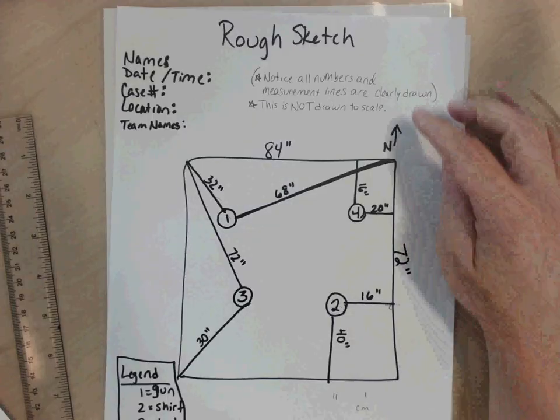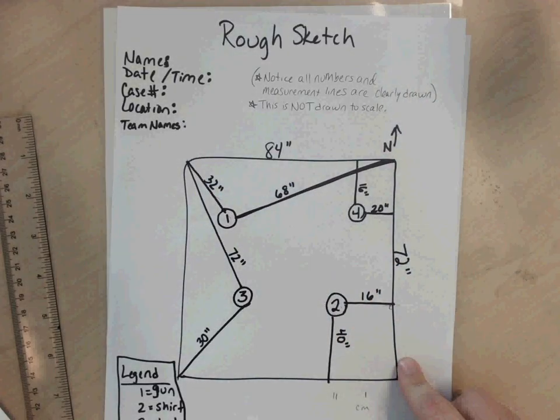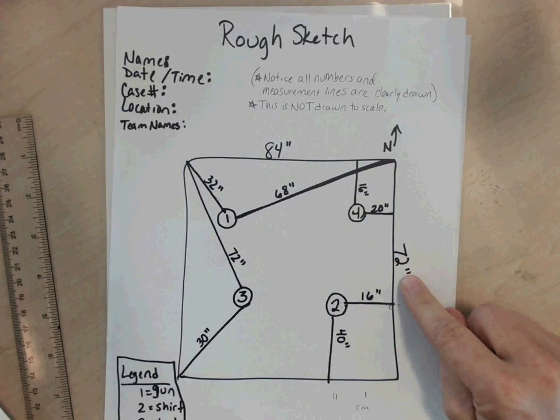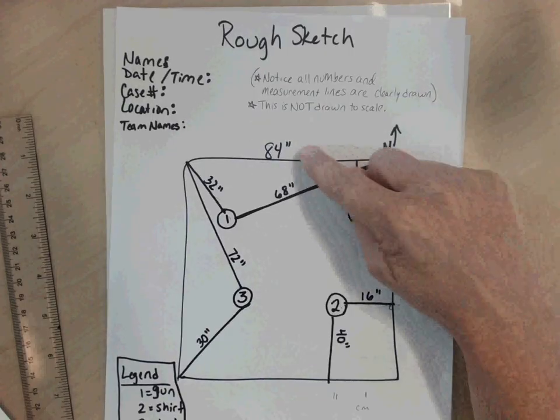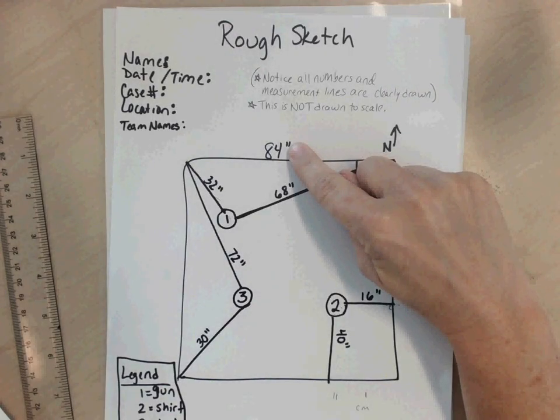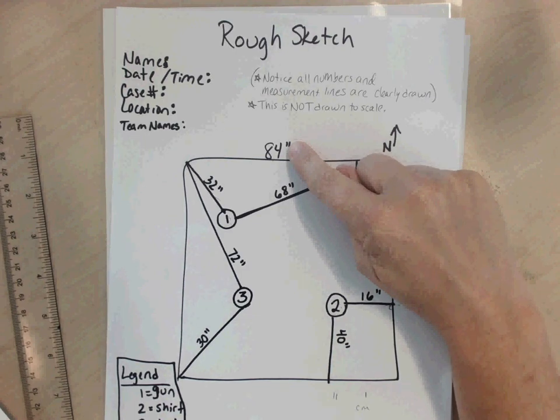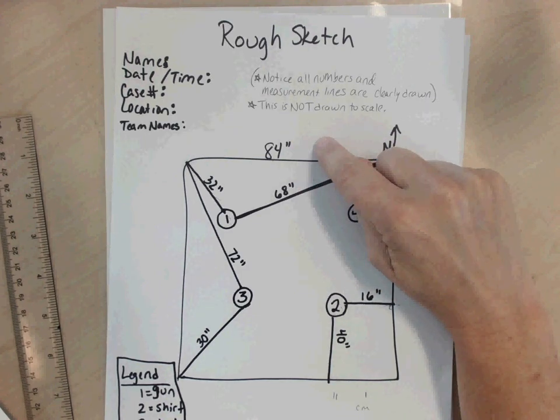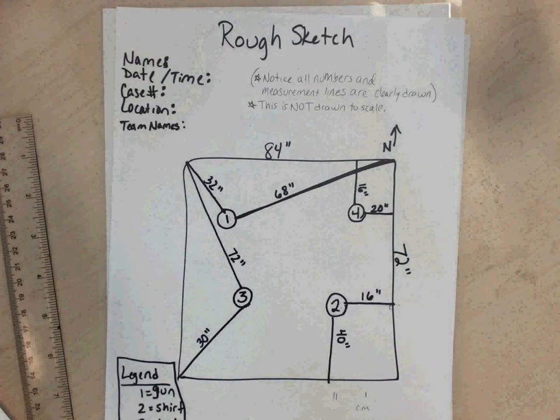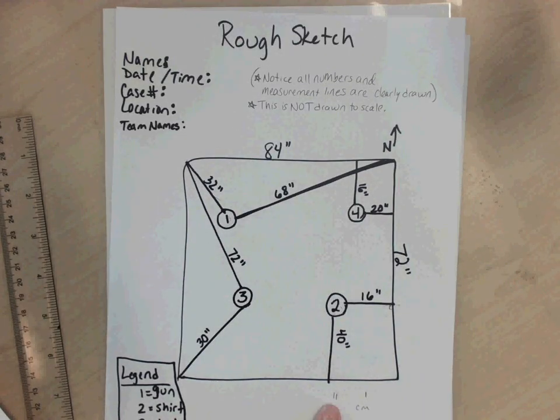You'll notice that on a rough sketch you have the perimeter of the room. You need to make sure that you have that clearly labeled. You also have a clear description of what the unit of measure is. Notice this is in inches. Two dots, two little dashes means inches, one little dash would be feet, and if it's centimeters you would just put centimeters.